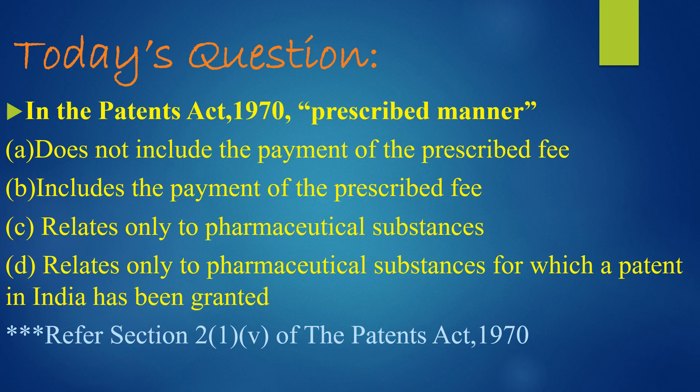So, if we go to the options, Option B — that is, includes the payment of the prescribed fee — is the correct one.